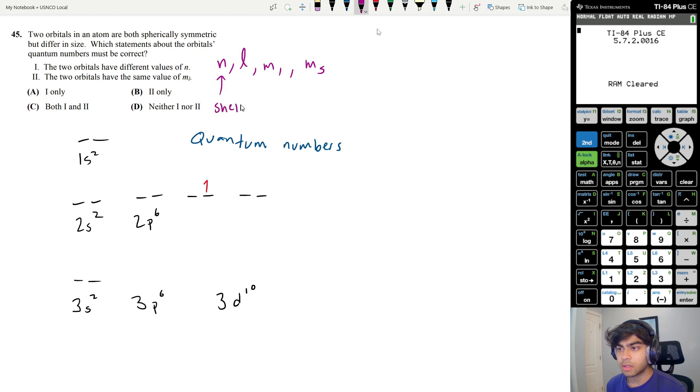n is your shell: 1, 2, 3, 4, whatever. l is going to be your shape. We have an s orbital, a p orbital, a d orbital. So s is going to have a number of l of 0, p has an l of 1, d has an l of 2, and f is 3, etc.